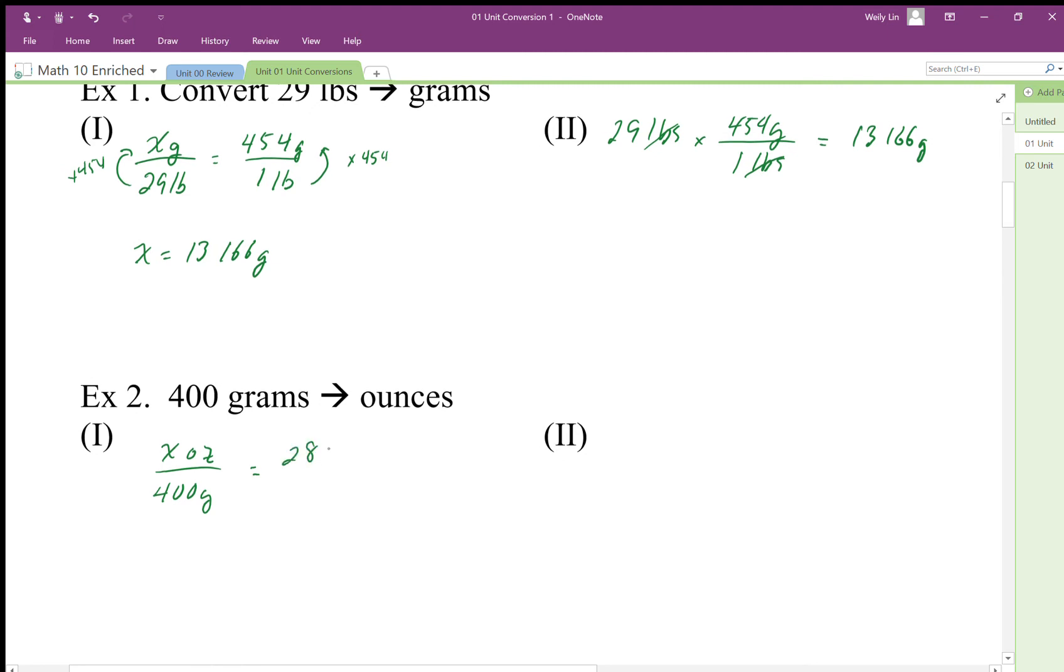Make sure we have it in the right order: one ounce equals 28.3 grams. When we use this multiplier—that's our unit rate, our multiplier—we're going to go in the opposite direction, so we're going to divide by that. We get 28.3.